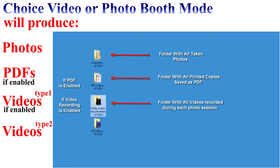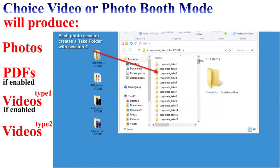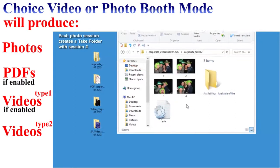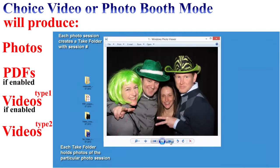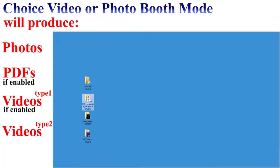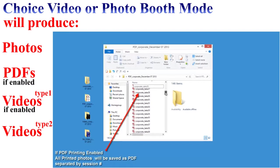Once again, the video folder is created as long as you've enabled that option, as well as a folder with all of the video recorded during each video session. The first folder is where all of our pictures are — inside you will see individual folders with take numbers, each containing individual photos taken by the camera.